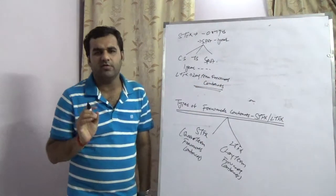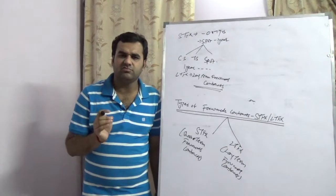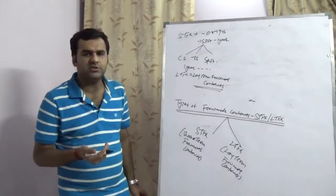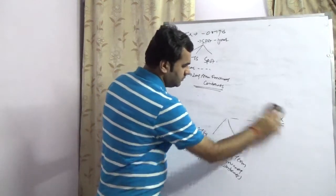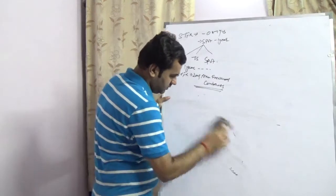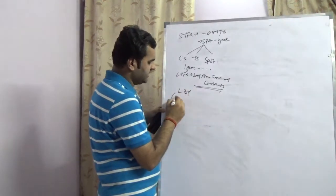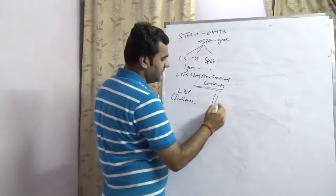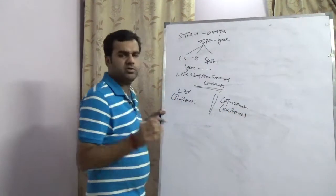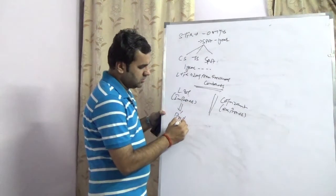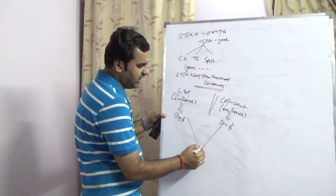Forward contracts can be categorized into two parts: one is known as short term forward contract STFX, and the second category is LTFX, known as long term forward contracts. Now, how to execute a short term forward contract and how to execute a long term forward contract — take a very simple example. Suppose there is a company in India which is L&T. L&T is an importer. Now L&T wants to buy dollars, and Cognizant wants to sell dollars, but both cannot buy or sell with each other.